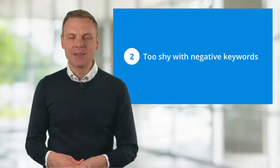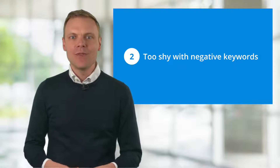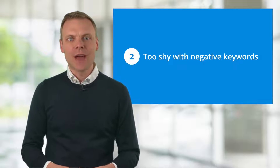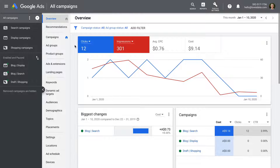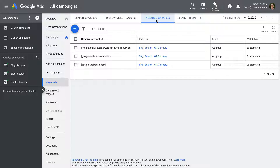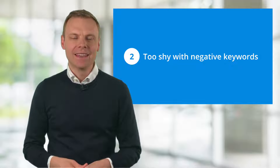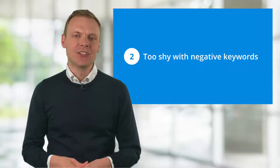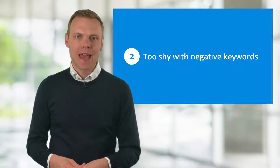Mistake number two is being too shy with negative keywords. Adding lots of negative keywords won't hurt the performance of your campaigns. In fact, it will help you achieve higher click-through rates, and your ads will be more relevant as people are searching. You can view existing negative keywords by selecting keywords, then select negative keywords at the top of the window. This shows a list of negative keywords added to your campaign or ad group. If you're adding the same keyword to more than one campaign, you can create a negative keyword list in the shared library to manage a single list applied to multiple campaigns.